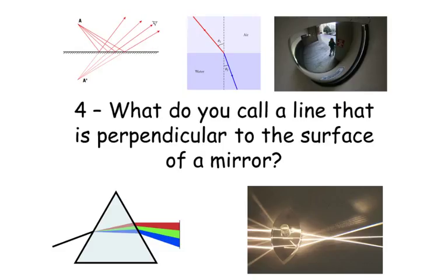Question number four. What do you call a line that is perpendicular to the surface of a mirror?